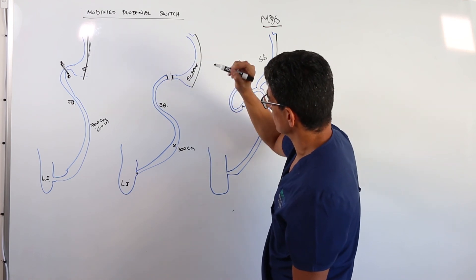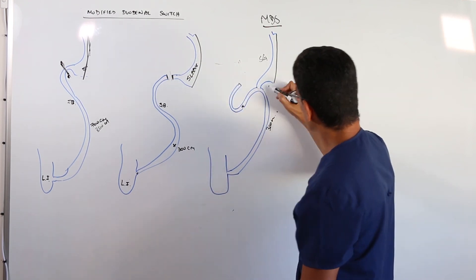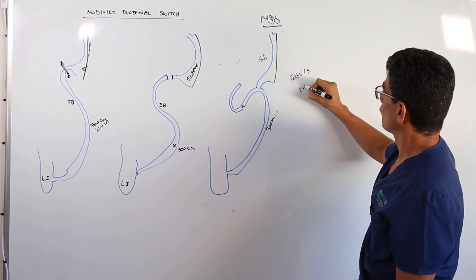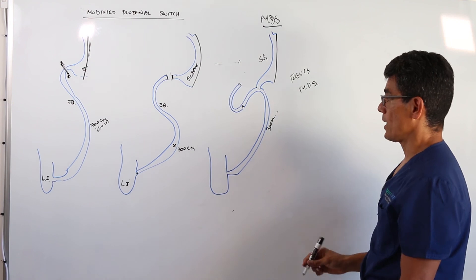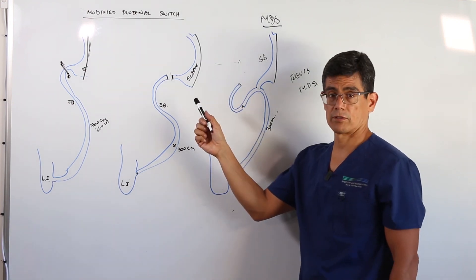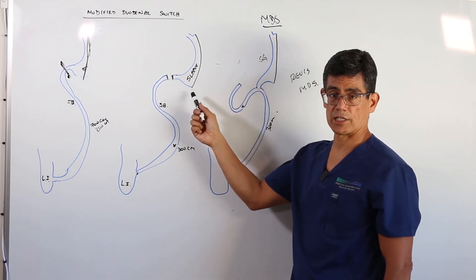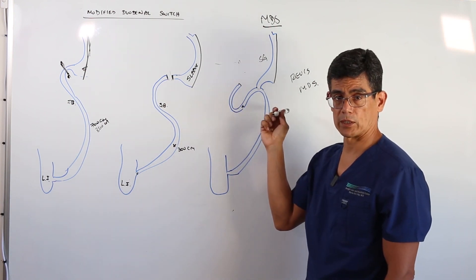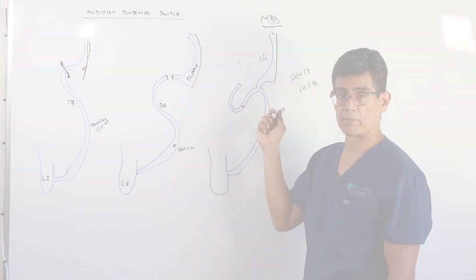So we can convert to a modified switch. All we do is we cut your intestine here. We count 300. We make this reconnection. That's called a revisional modified duodenal switch. And of all the alternatives for somebody who had a sleeve and failed, this is the one that works the best. It's the one that gives you the most weight loss with the least chance of the weight coming back.